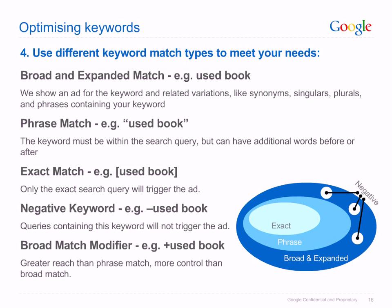Consider the match type you have set for each of your keywords. Broad match is the default keyword matching option — if you enter a keyword with no other parameters, it will be broad match. This means your ad will gain maximum exposure as it could be shown on variations, synonyms and plurals of your original keyword. For example, if targeting the keyword 'used book', your ad could be triggered by searches such as 'new book', 'used magazines', or 'used book London'. The benefit of broad matching is maximum exposure; the danger is that your ad shows for irrelevant searches that damage your CTR and ROI.